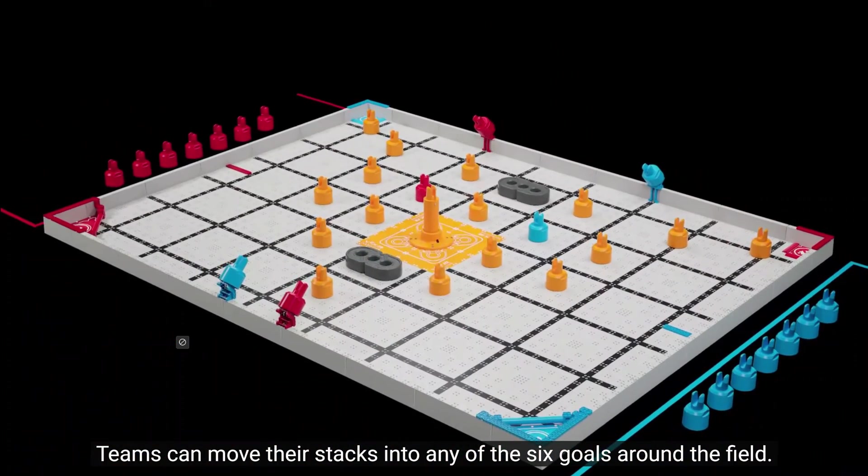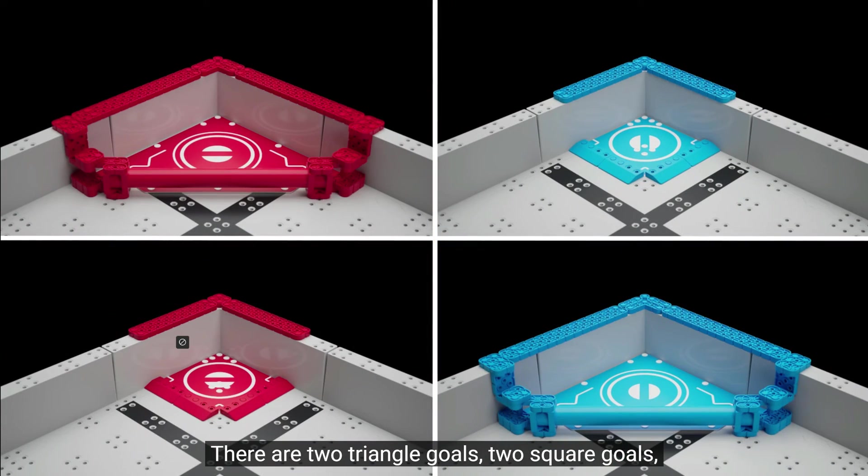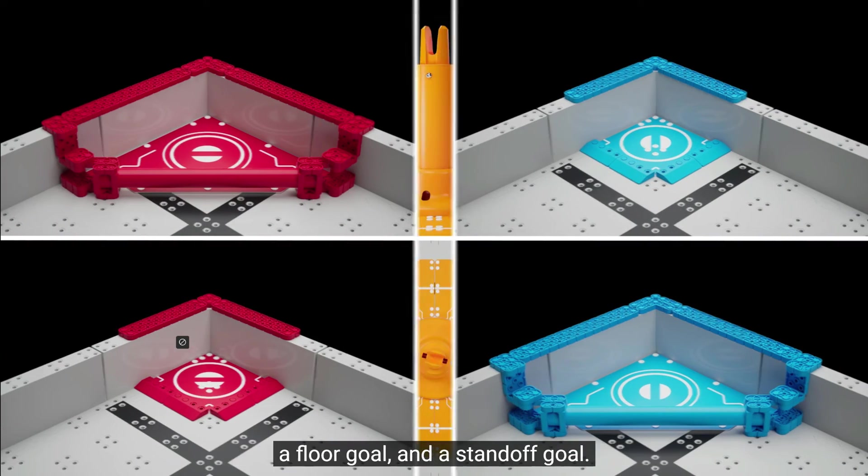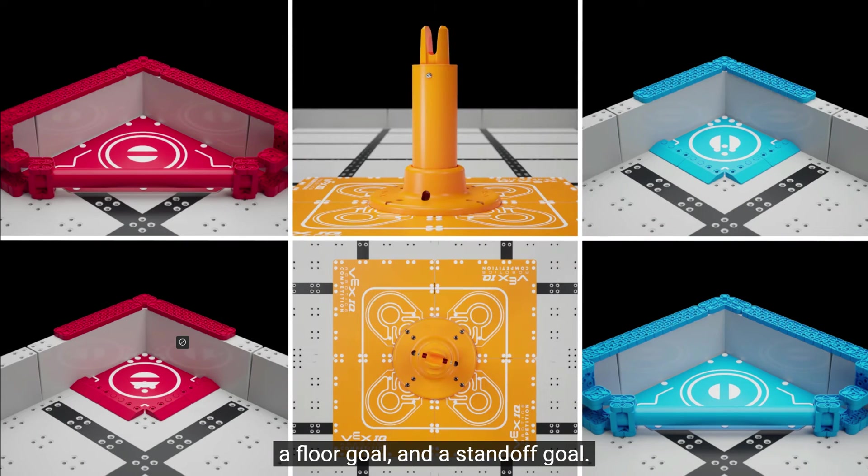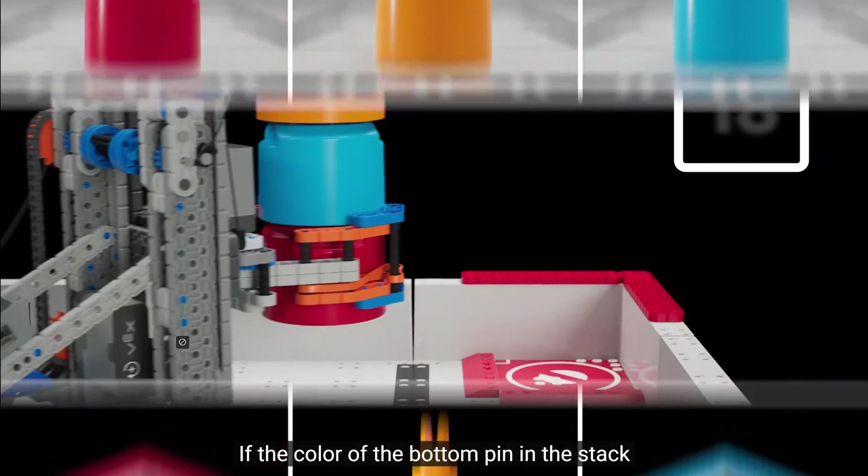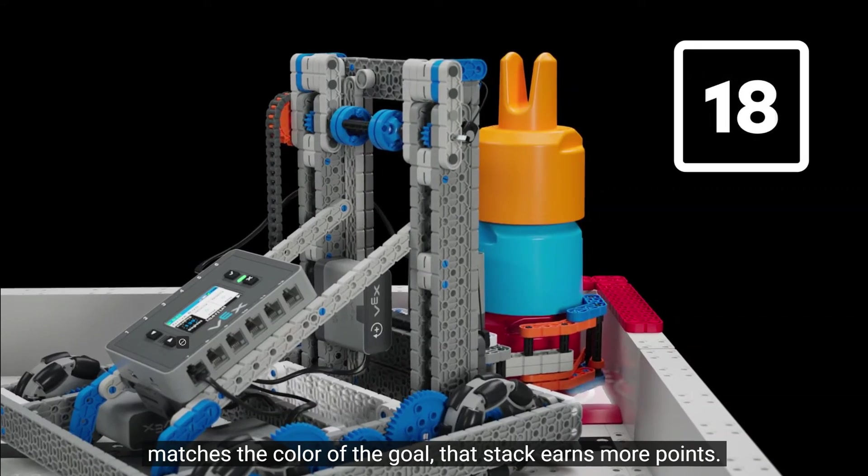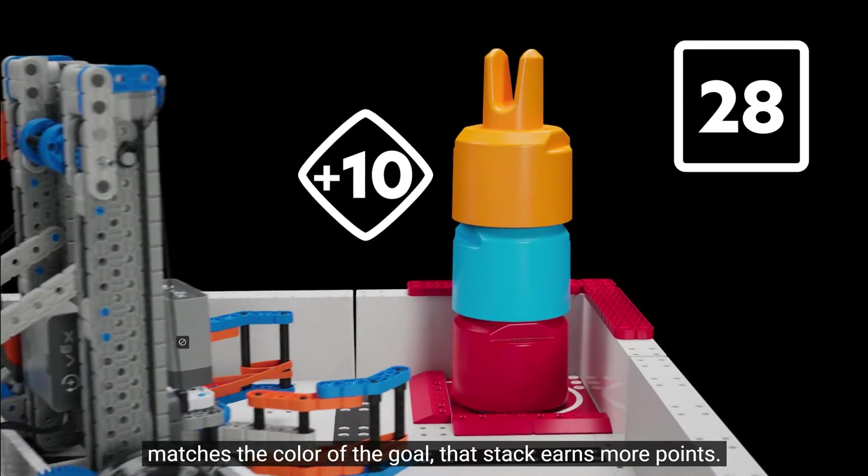Teams can move their stacks into any of the six goals around the field. There are two triangle goals, two square goals, a floor goal, and a standoff goal. Each goal has a color that matches one of the three pin colors. If the color of the bottom pin in the stack matches the color of the goal, that stack earns more points.